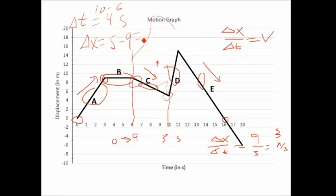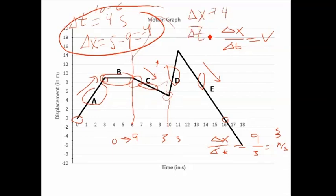Five minus nine is negative four. So if we take this whole thing, we get a delta x of negative four and delta t of four. The velocity here is negative one. Cool.